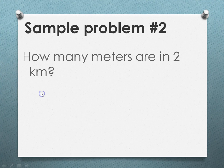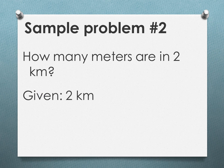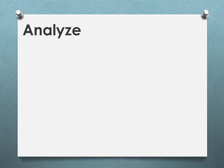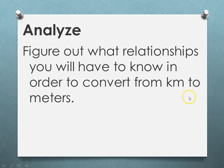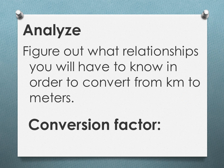So sample problem two asks, how many meters are in two kilometers? The given is two kilometers. The unknown is how many meters is that equivalent to. Analyze. Figure out what relationships you have to know in order to convert from kilometers to meters. And our conversion factor in this case is that one kilometer is a thousand meters.